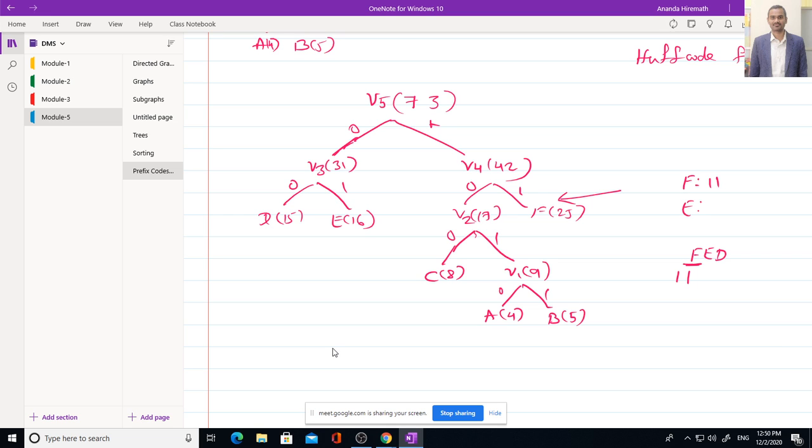For E, where is E? E is here. How to reach this E? From this root 0, then 1. 0, 1 is the Huffman code for E. For D, where is D? Here. How to reach D? 0, 0. So 0, 0 is the Huffman code for D.